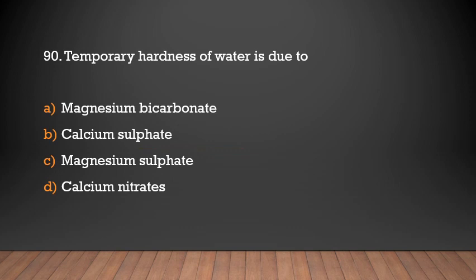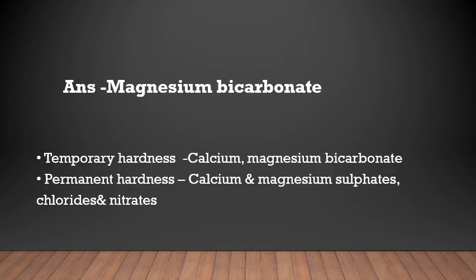Temporary hardness of water is due to: magnesium bicarbonate, calcium sulfate, magnesium sulfate, calcium nitrates. Answer: Magnesium bicarbonate. Temporary hardness of water is due to calcium and magnesium bicarbonates, and permanent hardness is due to calcium and magnesium sulfates, chlorides and nitrates.